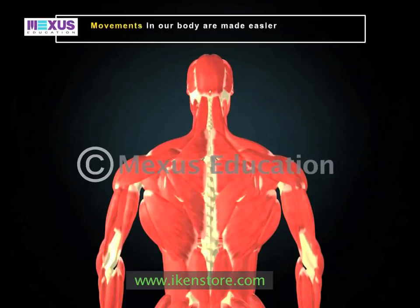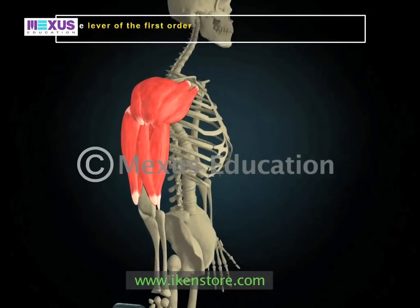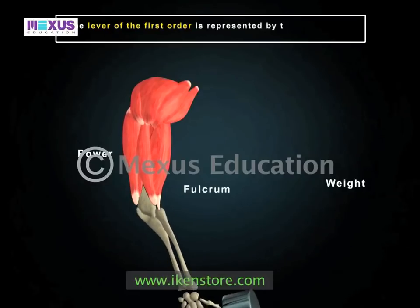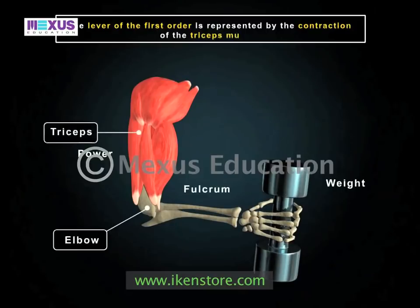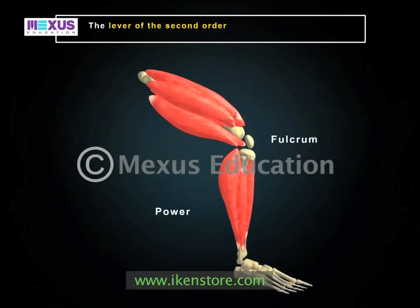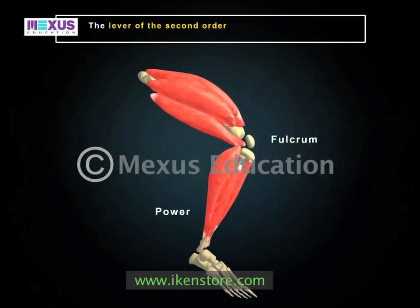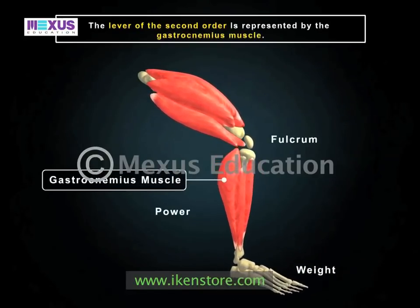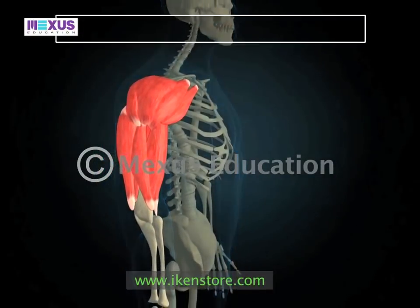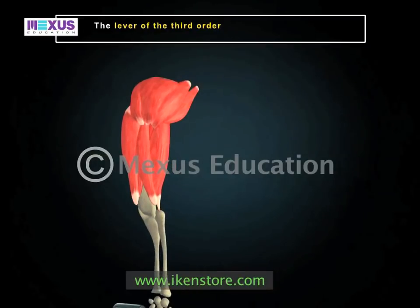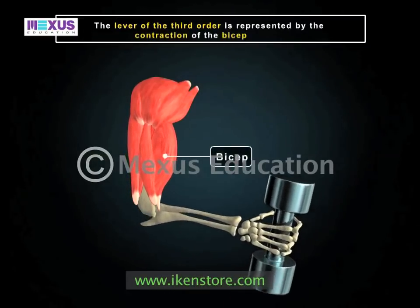Movements in our body are made easier due to lever action in the skeleton. In a first-order lever, the power and weight act with the fulcrum in between — represented by the extension of the arm at the elbow by the triceps muscle. In a second-order lever, the fulcrum and power are at each end with the weight in between — represented by the calf or gastrocnemius muscle raising the body weight on the toes. In a third-order lever, the fulcrum and weight are at each end with power in between — represented by the bicep muscle when flexing the arm.